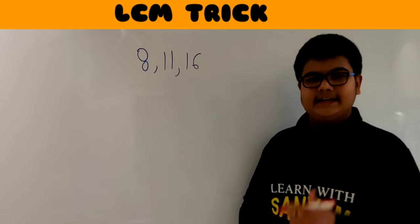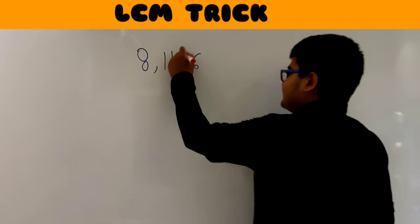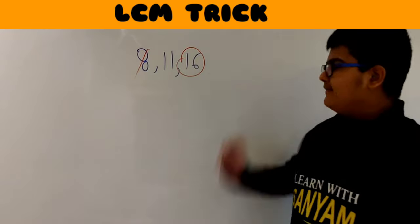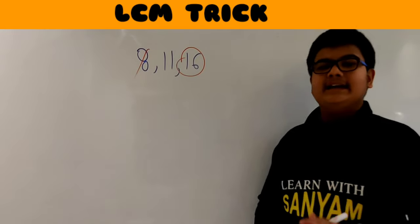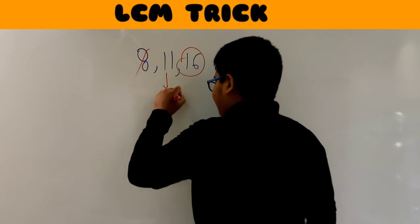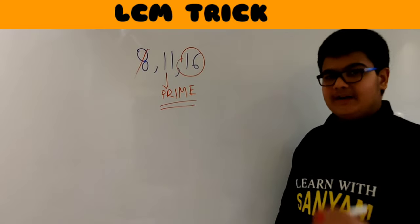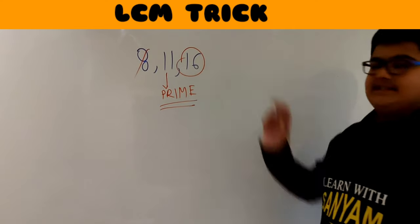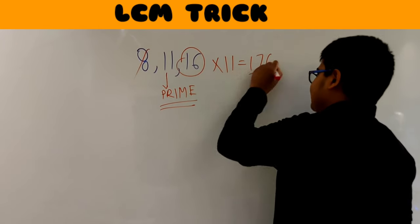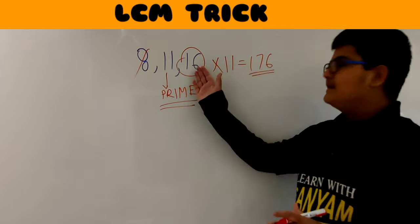Now here we have another set: 8, 11, and 16, but there is a small twist. The largest number is 16. 8 is completely divisible by 16, so that's done. But 11 is a prime number, which means it will not be divisible by any number other than 1 and 11. Whenever there is a prime number in the set, we multiply this prime number by the largest number. So our LCM will be 16 × 11 = 176. That is the twist — whenever there's a prime number, just multiply it by the largest number; you don't need to find multiples.